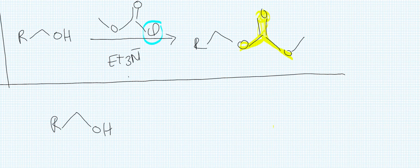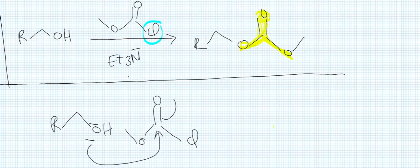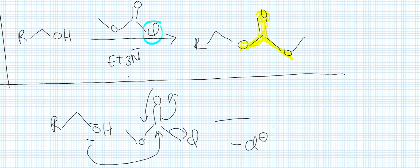So the reaction is going to be the attack of the alcohol on the carbonyl atom. So it's going to attack here. We pull electrons and then we go back to have a leaving group. So the chlorine leaves. So we have Cl minus.